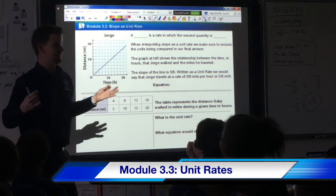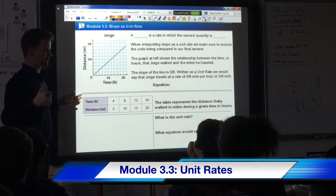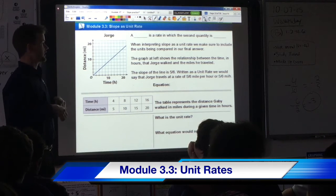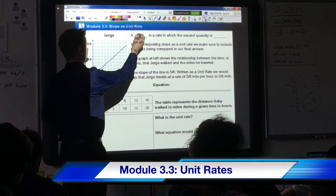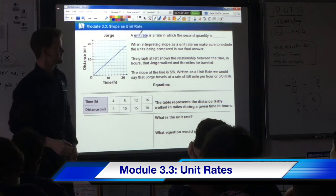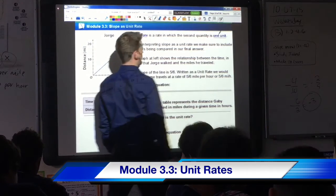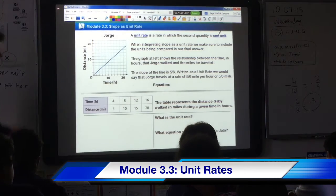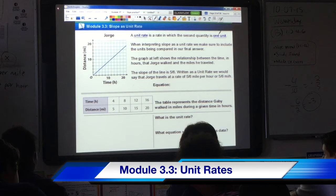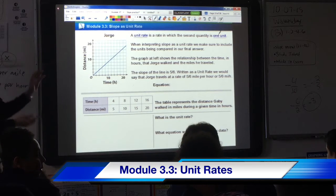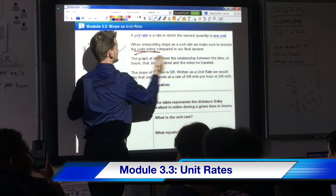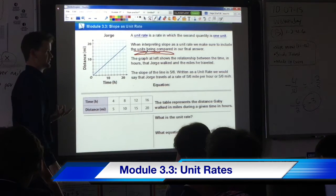Now that I changed my shirt by the magic of television, we're going to go into unit rates, which is 3.3. Keep in mind that a unit rate is a rate in which a second quantity is always going to be one unit. When we interpret slope as a unit rate, we have to make sure to include the units being compared in our final answer.